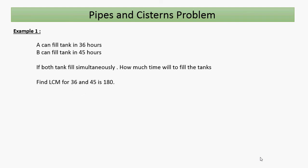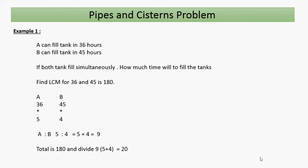First, find the LCM of 36 and 45, which is 180. For A: 36 × 5 = 180, so A's ratio is 5. For B: 45 × 4 = 180, so B's ratio is 4. Since both are filling simultaneously, we add: 5 + 4 = 9. Total time = 180 ÷ 9 = 20 hours. So our answer is 20 hours.